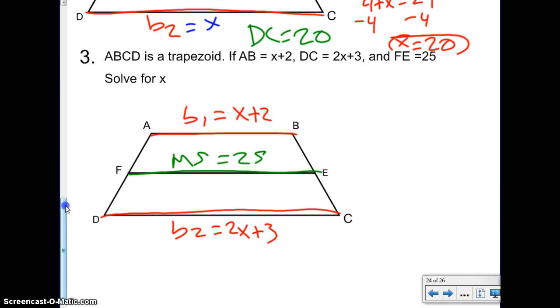Well, they told us everything. So, let's set up our equation and solve for X. I'm ready to move this time. So, we do B1 plus B2 over 2 equals MS. B1 is X plus 2. B2 is 2X plus 3. And MS is 25. Oh, don't forget to divide by 2.